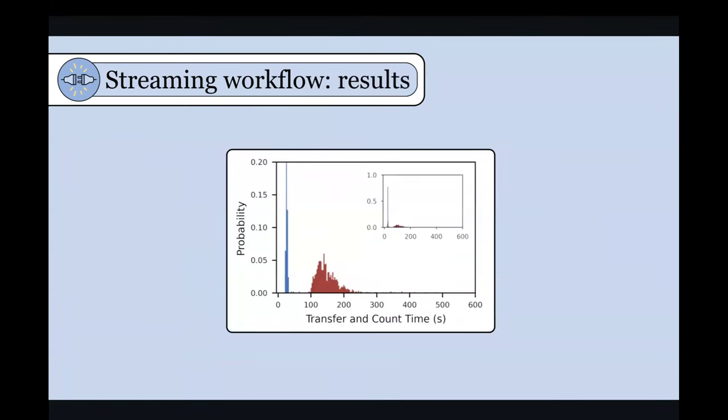So the results here show that the streaming workflow has a much tighter distribution of the transfer and count times. And I'm not sure if I mentioned this, but the count, counting is what we call this reduction operation. So we call it electron counting. The transfer and count times for streaming is a much narrower distribution. And it's a much faster process. So you can see that with file transfer, since we're relying on things like the file system, you can have a pretty wide distribution of times that it would take to run a particular size of data set over to NERSC and do this counting process.